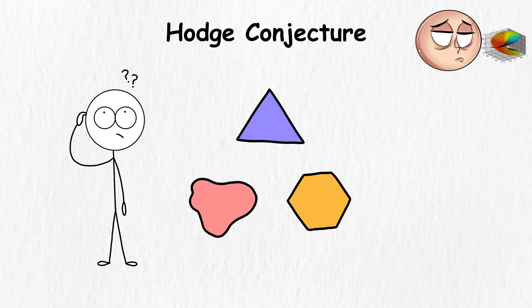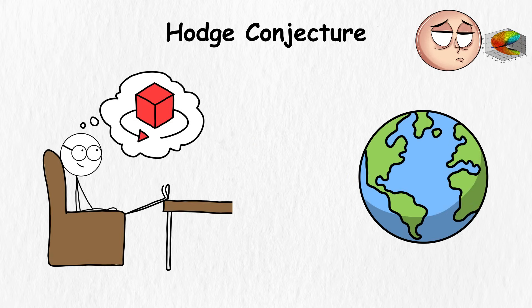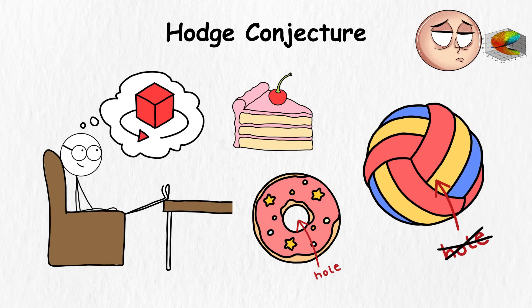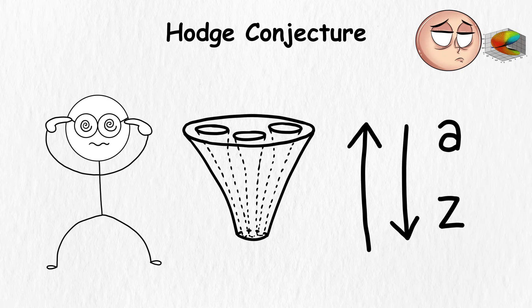Now try figuring out these shapes by examining their holes. In our cozy three-dimensional world, it's a piece of cake. A donut has one hole, while a ball has none. But in higher dimensions, things get bonkers, and shapes can have all sorts of bizarre holes.